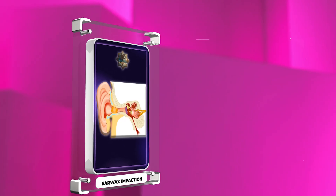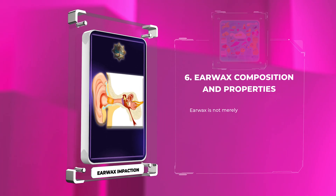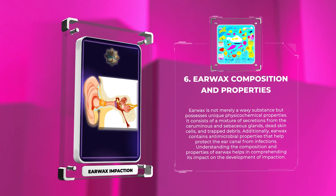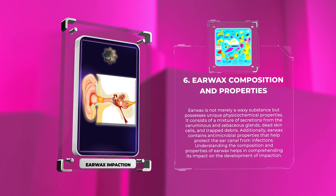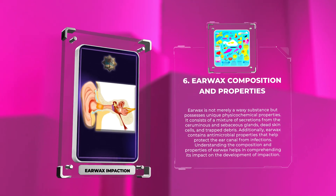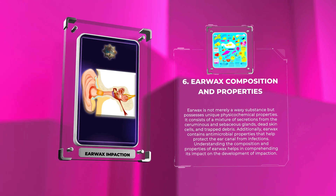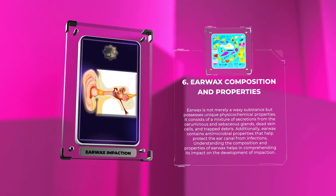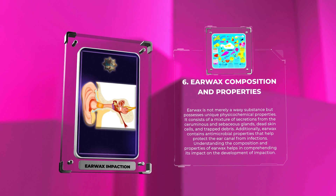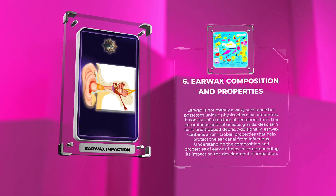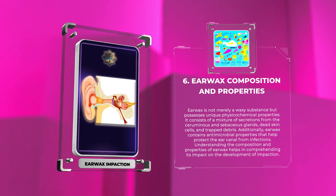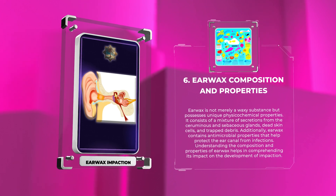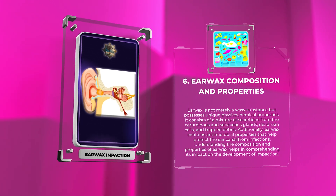Earwax is not merely a waxy substance but possesses unique physicochemical properties. It consists of a mixture of secretions from the ceruminous and sebaceous glands, dead skin cells, and trapped debris. Additionally, earwax contains antimicrobial properties that help protect the ear canal from infections. Understanding the composition and properties of earwax helps in comprehending its impact on the development of impaction.